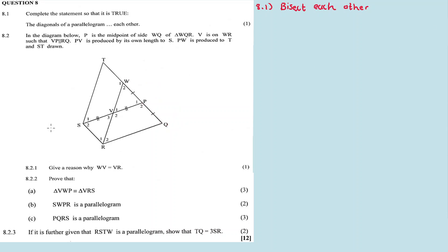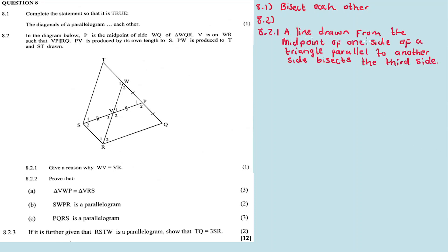For 8.2.1, we need to give a reason why WV is equal to VR. Why are they equal? We need to provide a reason as to why this is true. When a line is drawn from the midpoint of one side of a triangle, parallel to another side, it bisects the third side. So the reason is the Midpoint Theorem.